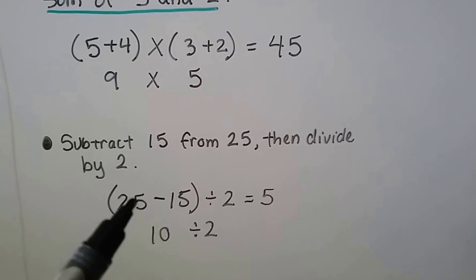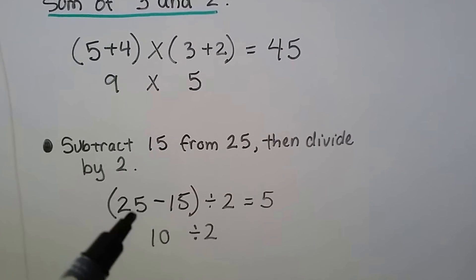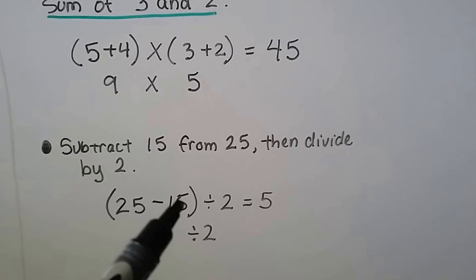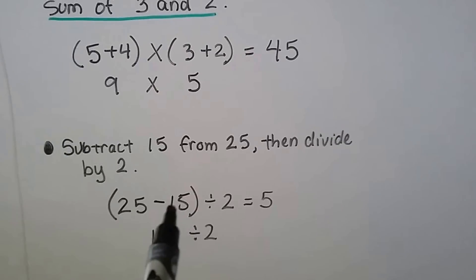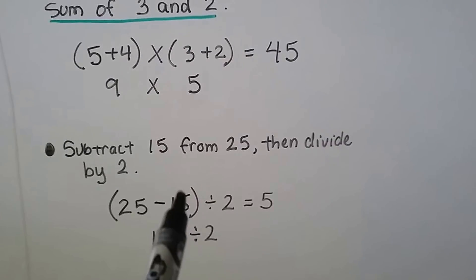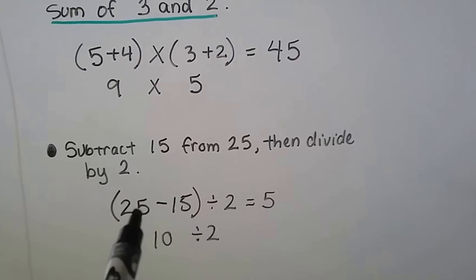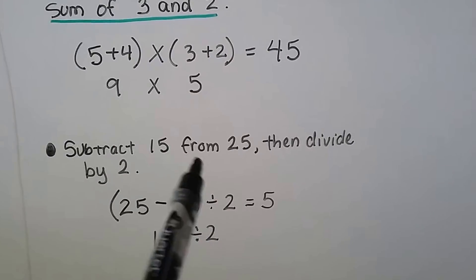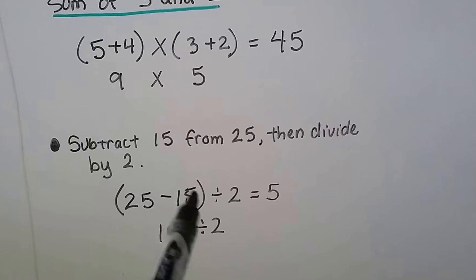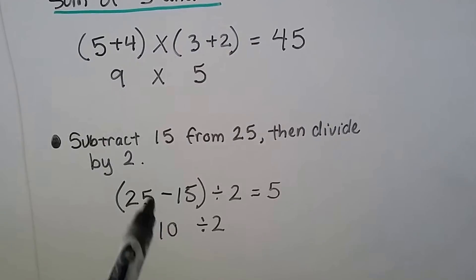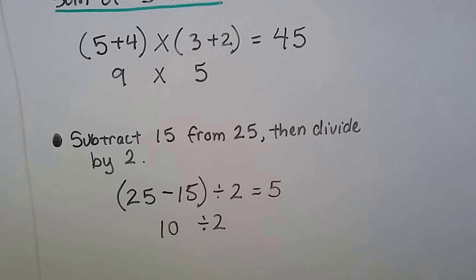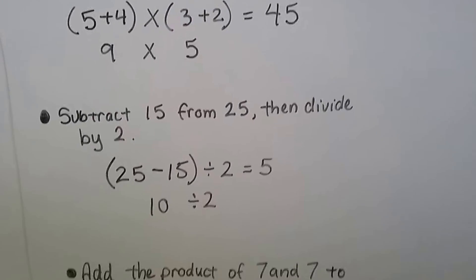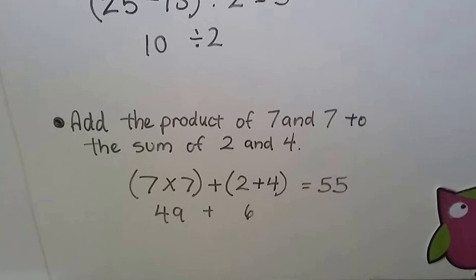'Subtract 15 from 25, then divide by 2.' If we're subtracting 15 from 25, the 15 is being taken away from the 25, so that means 25 minus 15. When 15 is the subtrahend it gets switched around, giving us 25 minus 15 in parentheses, then divide by 2. That's 10 divided by 2, which gives us 5.